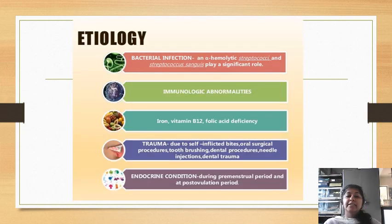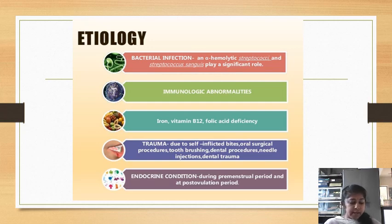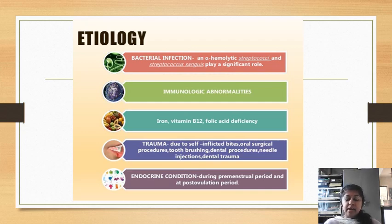Coming to the etiology or cause of Aphthous Ulcer, the cause is different in different populations and no single triggering agent is responsible. Numerous possible etiologic agents have been suggested. One of the etiologic agents may be bacterial infection — alpha hemolytic streptococcus and Streptococcus sanguis play an important role, as some bacteria are identified from patients with Aphthous Ulcer.